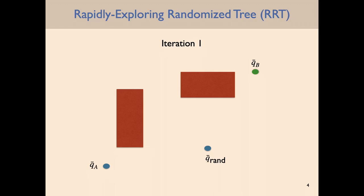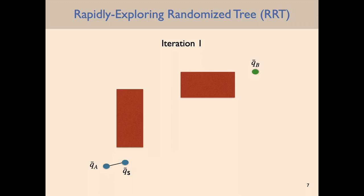The first step of the algorithm: sample some random configuration — ignoring the obstacles, just some random configuration — we'll call that Q_rand. You then look at the line segment that connects Q_A (the starting configuration) to Q_rand in configuration space, and extend along this line segment by some parameter D — a fixed step size set before running the algorithm. The extended point is called Q_s. You then check whether Q_s is in collision or not.